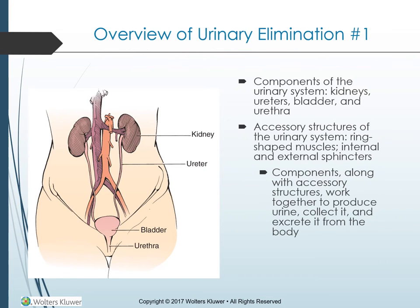Overview of urinary elimination. The urinary system is made up of the kidneys, ureters, bladder, and urethra. These major components, along with accessory structures such as the ring-shaped muscles called the internal and external sphincters, work together to produce urine, collect it, and excrete it from the body.